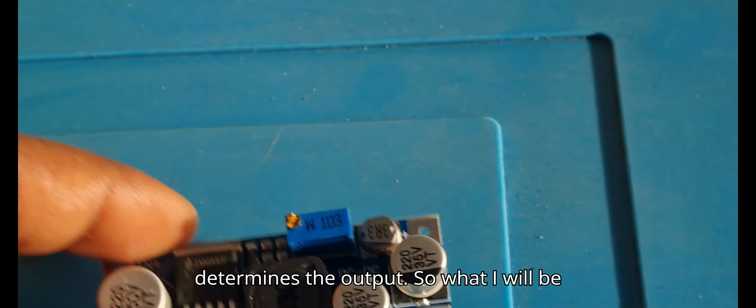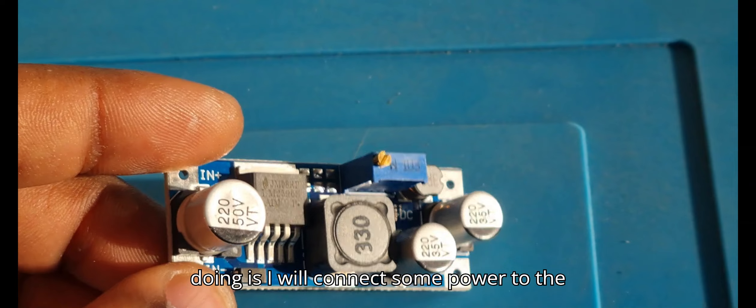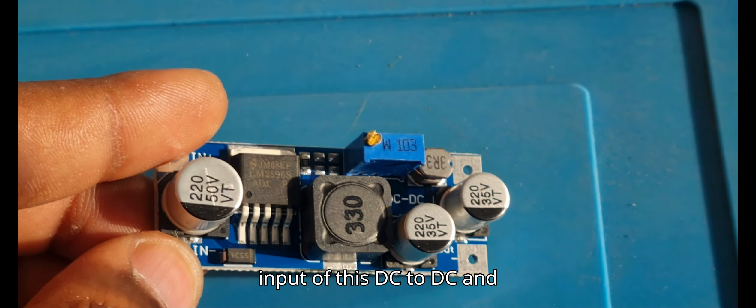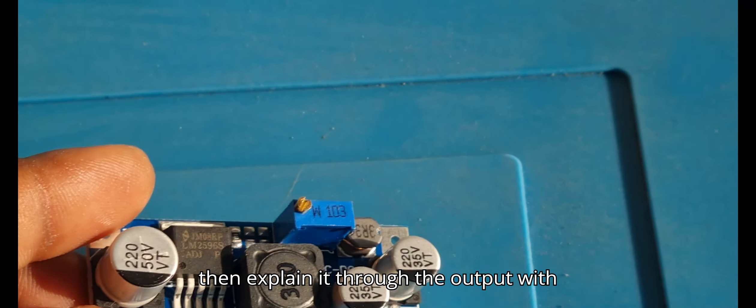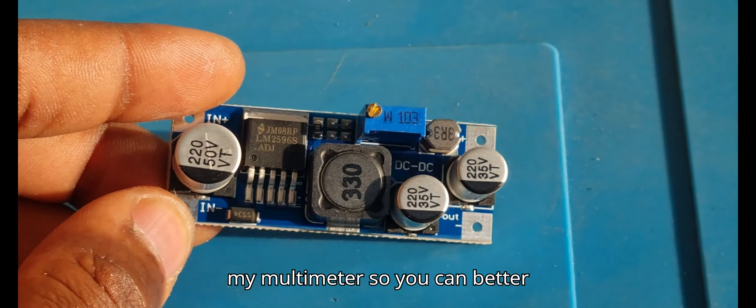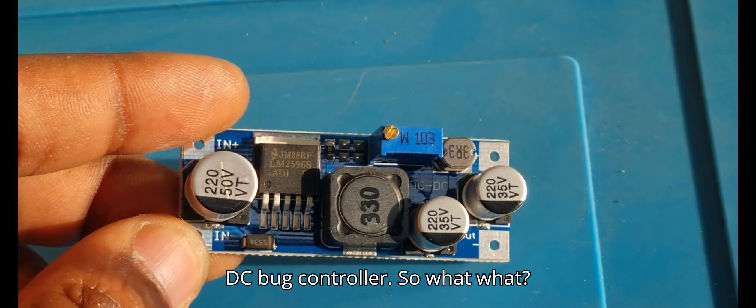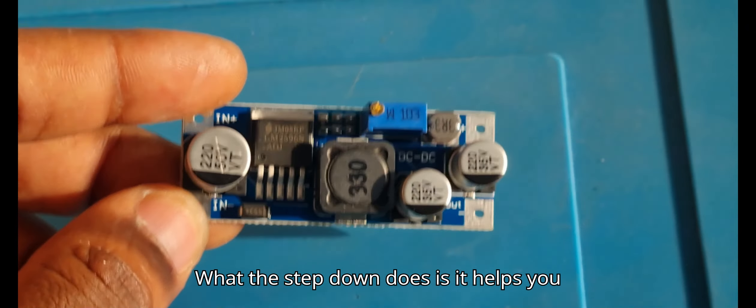So what I'll be doing is connecting power to the input of this DC to DC, and then explain it through the output with my multimeter, so you can better understand what's going on with this DC to DC buck converter.